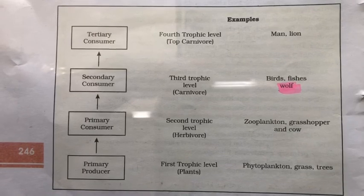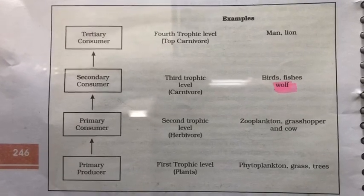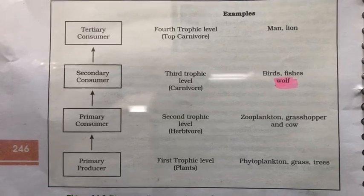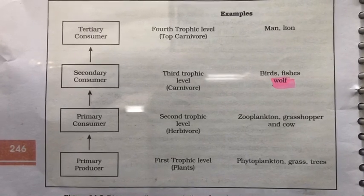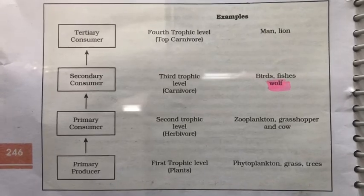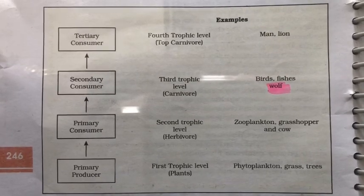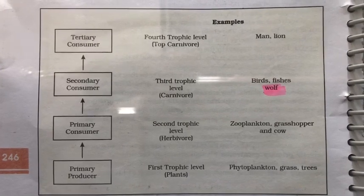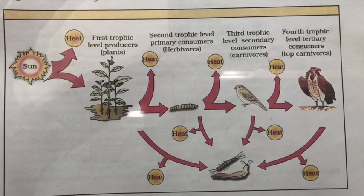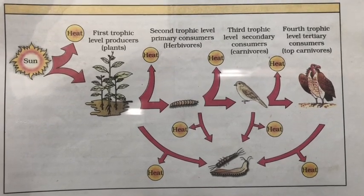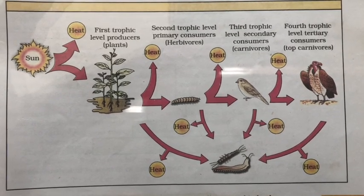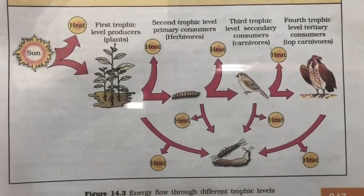A grazing food chain is also found in aquatic ecosystems. In a pond, phytoplanktons or small grasses and seaweeds form the first trophic level, zooplanktons or insect larvae are next, then fishes, and finally fish-eating birds. These interconnected food chains form a food web, where the sun's energy is utilized by plants, fed upon by insects or larvae, then by snails or birds, and finally by birds of prey at the highest trophic level.